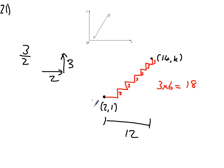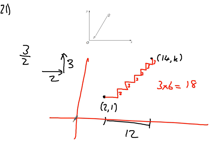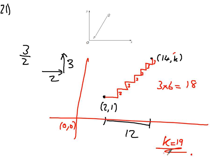I've started at 1 because on the axis, (0,0) is there. I've actually gone 2 across and started 1 up, so K is going to be 19 because it's 18 up from the 1. So K = 19.